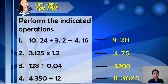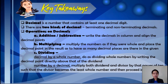Did you get all of this without the use of a calculator? If yes, great job. Now, here's the summary of what you have to remember about decimals. First, a decimal contains at least one decimal digit, and there are two kinds of decimals: terminating and non-terminating. For the operations on decimals — in adding and subtracting, we write the decimals in column and align the decimal points. In multiplying, we multiply the numbers as if they were whole and place the decimal point in the result as to how many decimal places are in the given. And in dividing a decimal by a whole number, we do it as if we are dividing whole numbers by writing the decimal point directly above that of the dividend. And in dividing a number by a decimal, we multiply both dividend and divisor by that power of 10 such that the divisor becomes the least whole number, and then proceed in dividing.